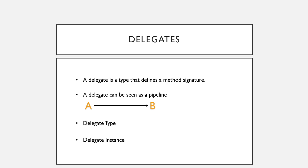Jon Skeet mentions that to help understand delegates it's important to distinguish between a delegate type and a delegate instance. A delegate type defines a method signature, just like an interface does. A delegate instance is an instance created from the delegate type. You can declare a delegate type either on their own or within a class.